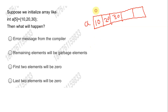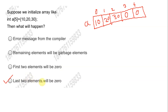The element at index 0, index 1, and index 2 are initialized to 10, 20, and 30 respectively. Hence, all the remaining elements will be automatically initialized to 0. So the element at index 3 and index 4 will be initialized to 0 automatically. The answer to this question is option D — the last two elements of the array will be initialized to 0.